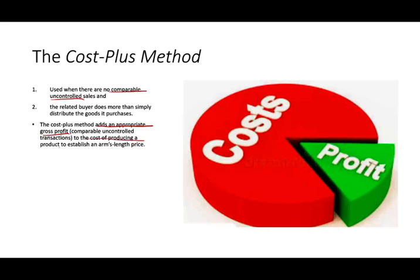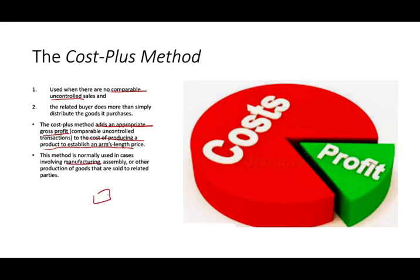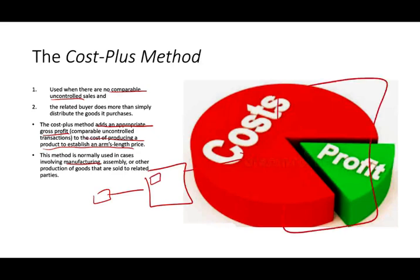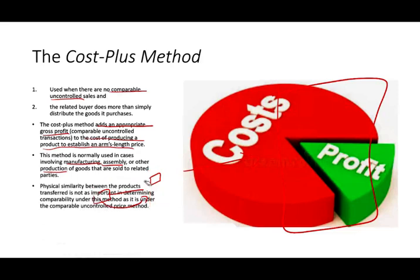The cost plus method adds that gross profit to the cost of producing a product to establish an arm's length transaction. This method is normally used in cases involving manufacturing, because you sell items that go into a bigger product. For example, you sell a radio that goes into a car, or batteries assembled into a car. The physical similarity between the products transferred is not important in determining comparability under this method, as it is under the comparable uncontrolled price method.